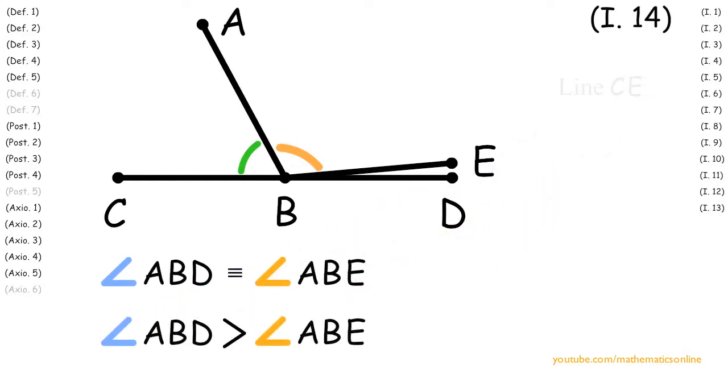But we also have that angle ABD is greater than angle ABE. It's not possible to have both true at the same time, so we have a contradiction. Now the reason we have this contradiction is because we assumed that line CE is a straight line, therefore it must be false.